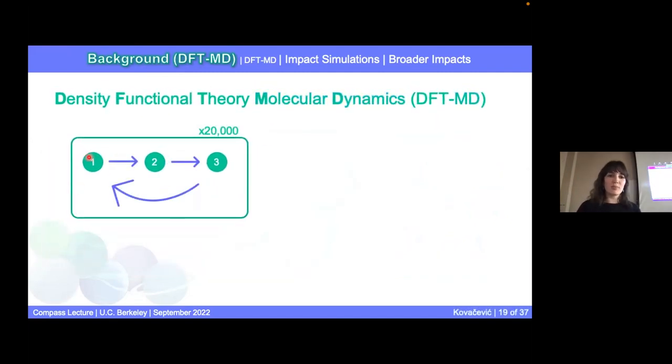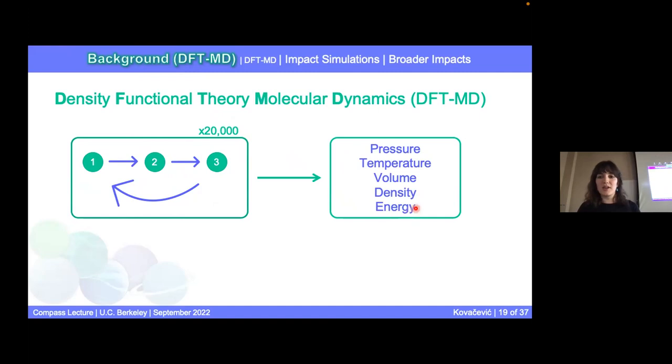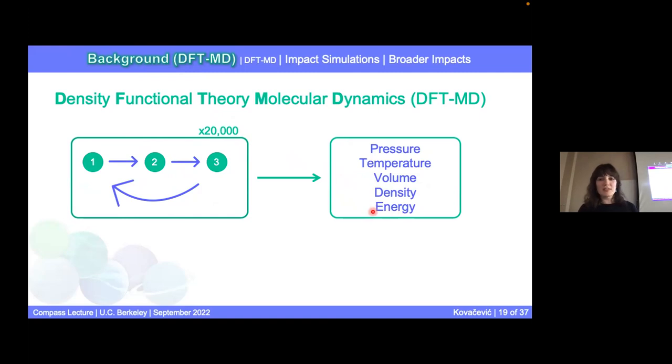So again, we can perform steps one through three and do that over and over again, several tens of thousands of times until we obtain a molecular dynamics trajectory. And I'll show you a trajectory in a couple of slides. It's kind of fun to see. But from these trajectories, we're able to get a lot of thermodynamic information, such as pressure, temperature, volume, density, and energy. And then from these, we can derive a bunch of stuff. So for example, we can derive an equation of state. So how the phase of the material in thermodynamic equilibrium, we can get material properties. So it gives us some information about the structure of planets.